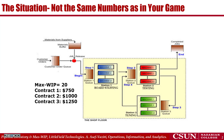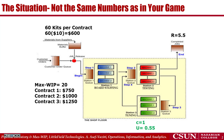We have three contracts: Contract 1 gives 750 units, Contract 2 gives 1000, and Contract 3 gives 1250. Each product needs 60 kits, and each kit is purchased for ten dollars. Throughput for the time being is 5.5. Station 3 has 1 machine with utilization 0.55, Station 1 has 1 machine with utilization 0.6875, and Station 2 has 1 machine with utilization 0.916667.